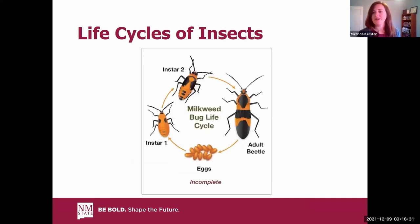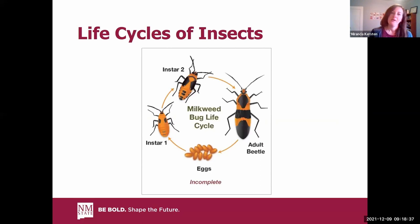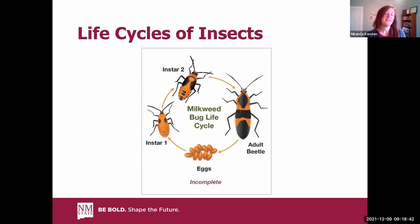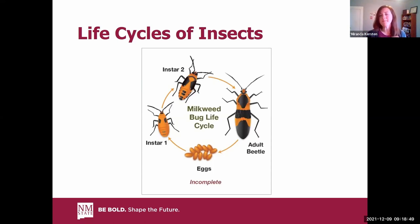Other insects go through incomplete metamorphosis — the example here is a milkweed bug. Within this type of metamorphosis, there are three life stages: the egg, the nymph, and the adult. Although the nymphs may go through multiple molts, in most cases the nymphs and adults appear very similar, but the adults may have wings.